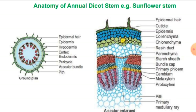The secondary growth takes place in the vascular region, no doubt, but only secondary xylem and secondary phloem develop — medullary rays cannot develop. So secondary growth in the vascular region produces three outputs: secondary xylem, secondary phloem, and formation of medullary rays. But here only two types of tissue form — secondary xylem and secondary phloem — while medullary rays are not formed.